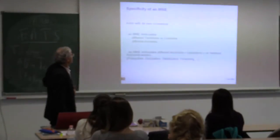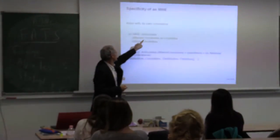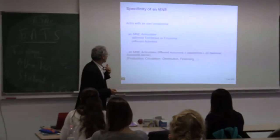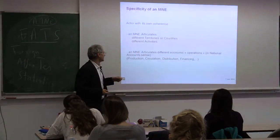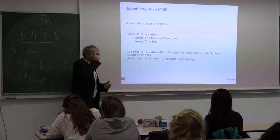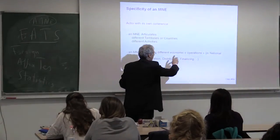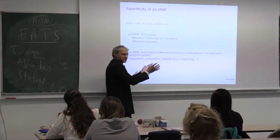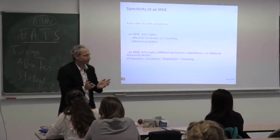The specificity of a multinational enterprise is that it is an actor with its own coherence that articulates different territories or countries and different activities — not only different activities, but different economic operations or moments in the sense of national accounts. They make production, circulation, distribution, and financing inside. Our economic framework assigns production to firms, circulation to the market, distribution also, but multinationals integrate the whole.